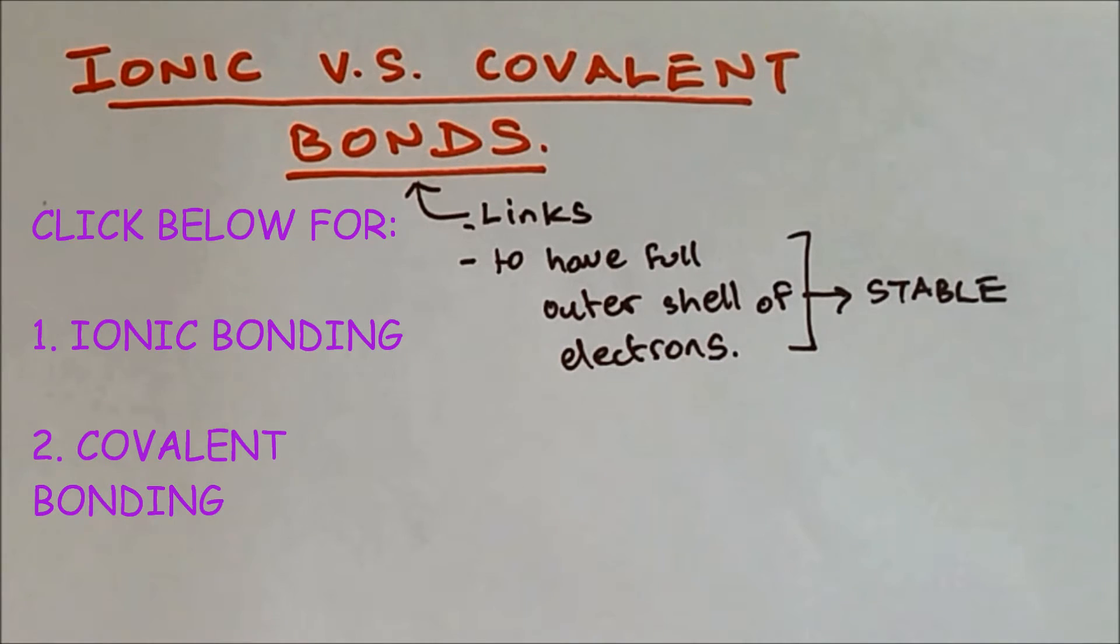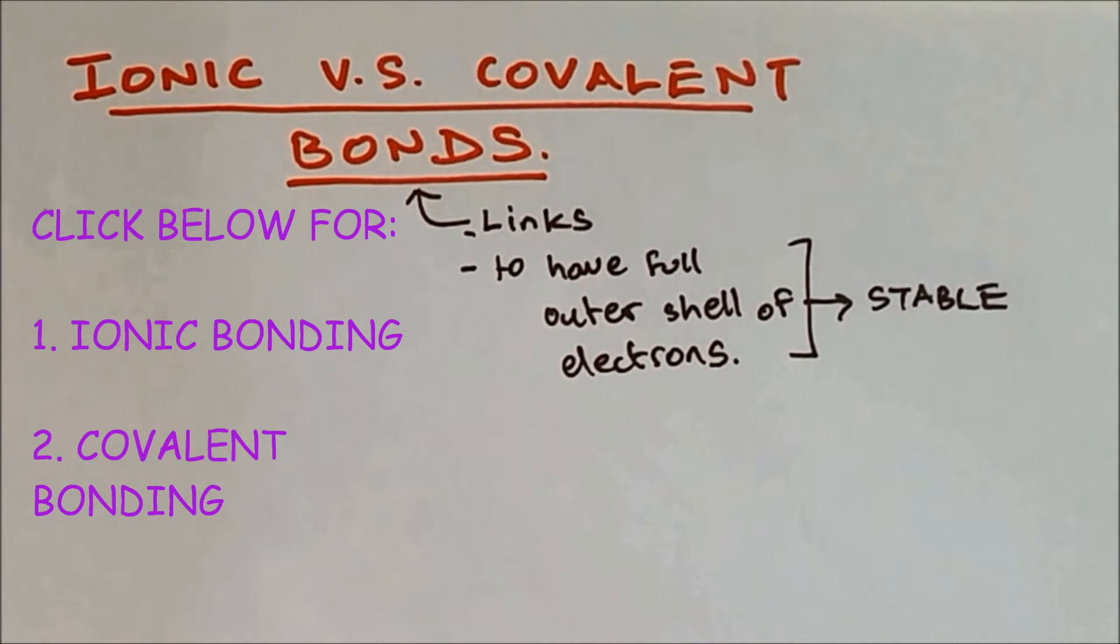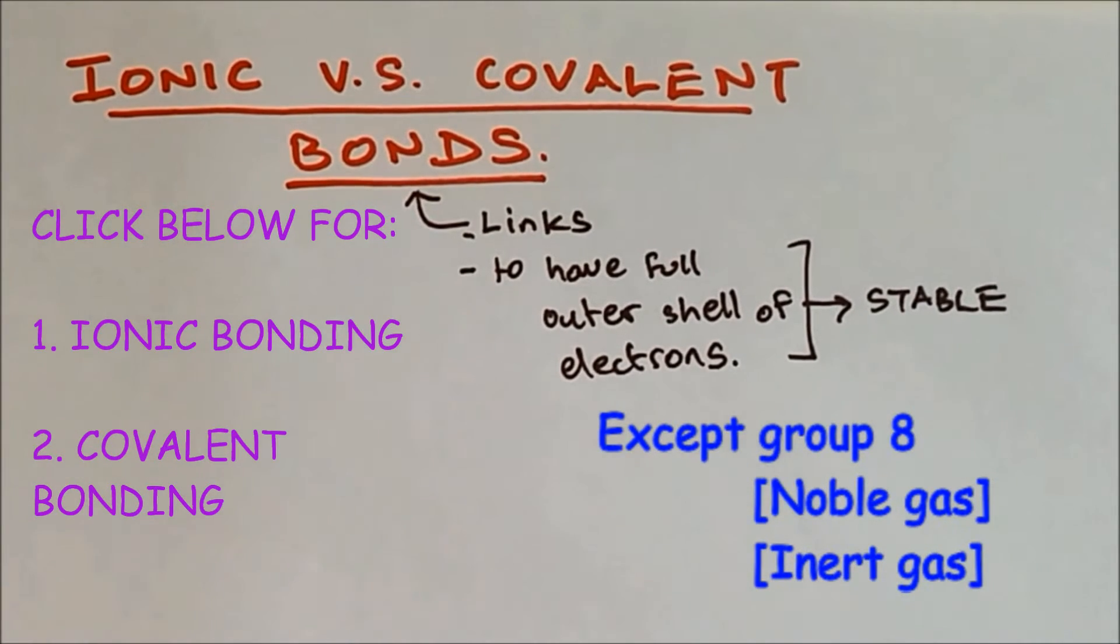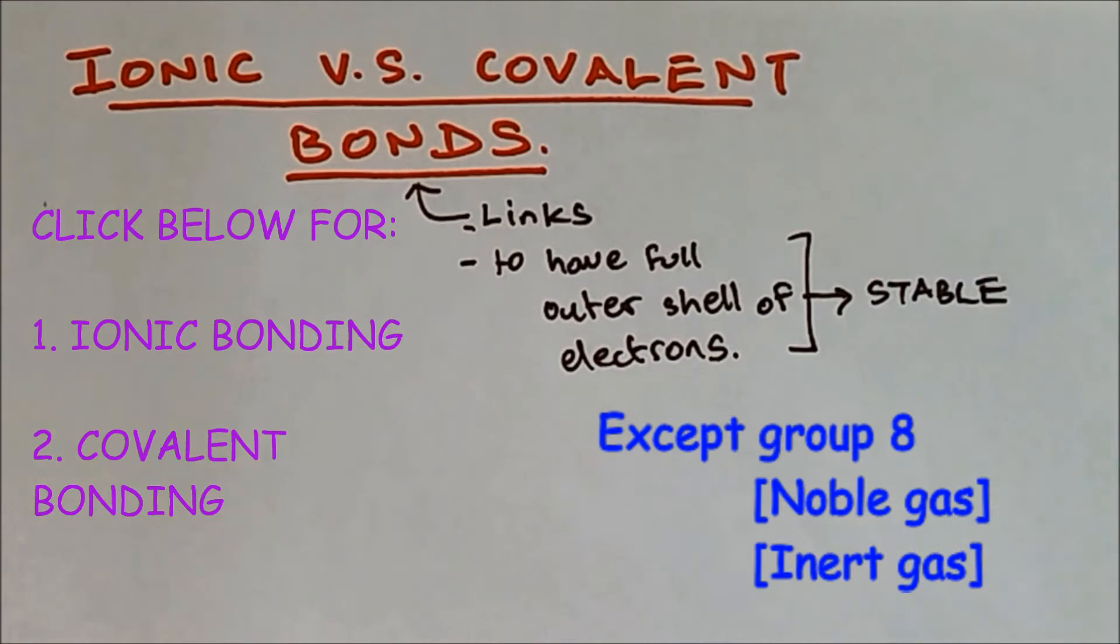And such bond can be either ionic or covalent. So all the atoms want to have full outer shell of electrons, but group 8 or noble gas have full outer shell of electrons.